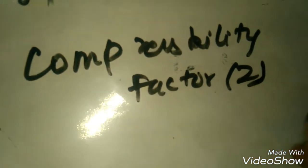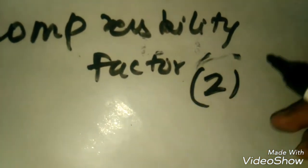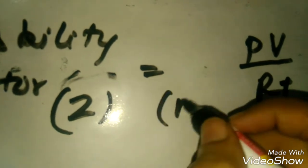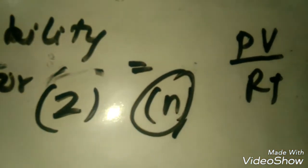And last, compressibility factor. Compressibility factor, this is Z. What is Z represented by? This is PV upon RT. So we can call it n because the equation PV equals to nRT, and this is PV upon RT, and this is Z, compressibility factor.